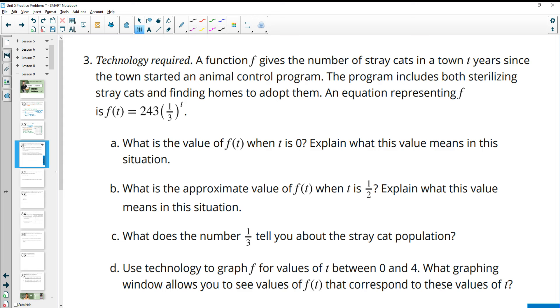Number three, a function gives the number of stray cats in a town T years since the town started an animal control program. The program includes both sterilizing stray cats and finding homes that will adopt them, trying to reduce the number of stray cats that are there. An equation representing F is given to us right here. What is the value F of T when T is zero? This is that initial value. You can plug zero in here or recognize that it's just going to be this 243. And this would be the amount of stray cats when the program started.